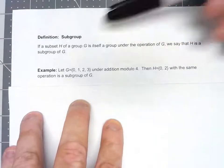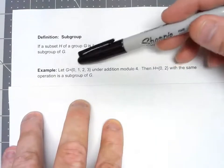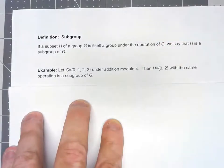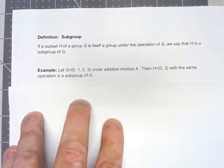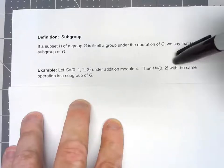So if we have just a simple little group, we have the integers 0, 1, 2, 3, we're going to add them mod 4. We know that that's a group, we've looked at that before. So what about the set containing 0, 2?